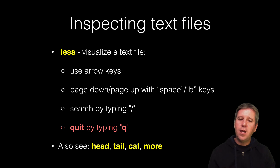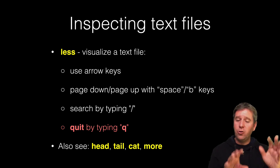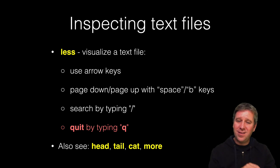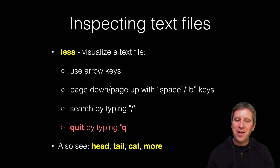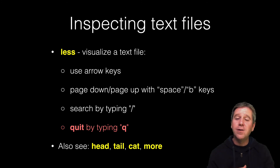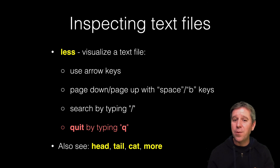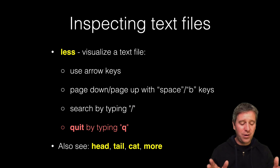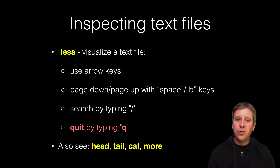A couple more commands for investigating the contents of a file: there's more (m-o-r-e), which prints out the contents of a file that you can page through. It's an older program, superseded by less. In true UNIX nerd fashion, the person who wrote the better version of more said 'less is more,' so they called it less — funny if you're already in the field, but not a helpful name for newcomers. With less, you use arrow keys to navigate, space bar to page forward, and q to quit.